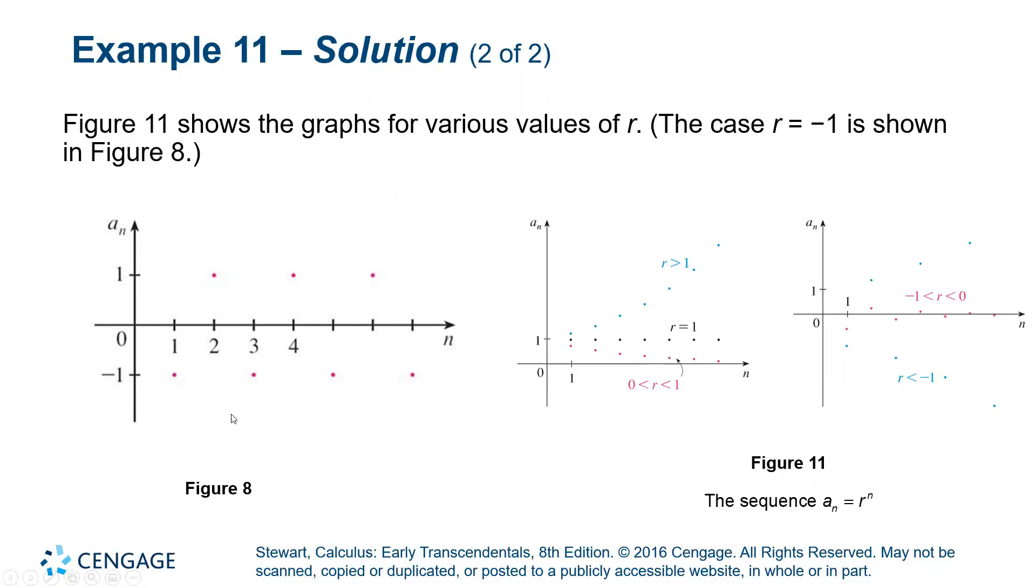So negative one to a power simply bounces back and forth between negative one and positive one. Because one to a power is itself and the negative with it just changes the sign back and forth between negative and positive.